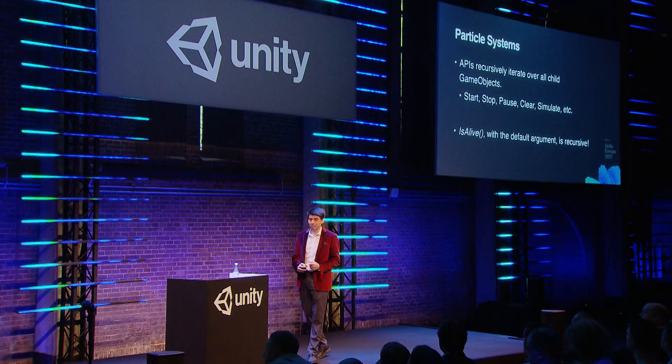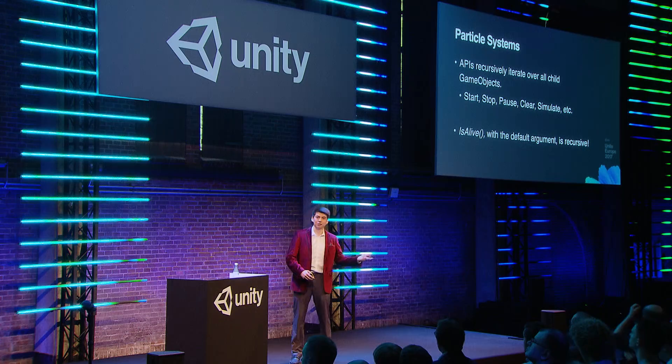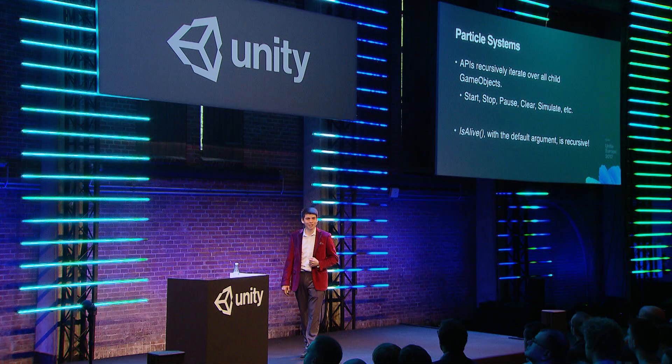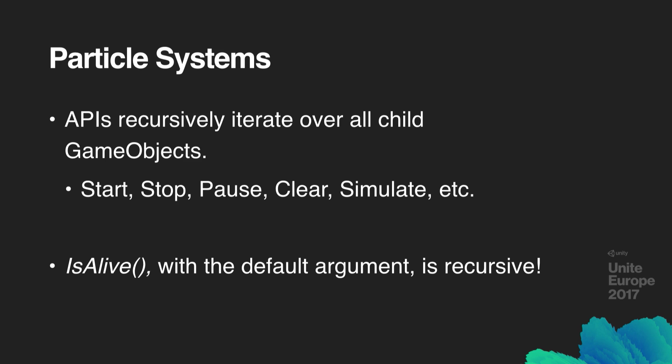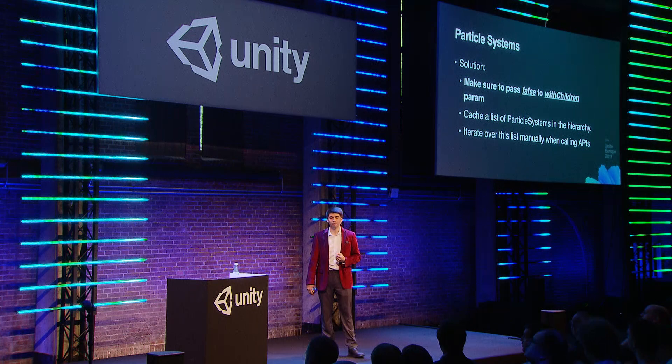It doesn't do this in any particularly intelligent way. It goes to the particle system, finds all the children of that particle system's transform, calls GetComponent on every single one of those transforms, and if there is a particle system, it invokes the appropriate Stop, Start, or IsAlive method. If those child transforms have their own children, it recurses into those as well. If you have a particularly deep transform hierarchy, this can definitely become a problem. All these APIs have a WithChildren parameter — it defaults to true. Set it to false; it eliminates this behavior and will only change the particle system you're calling directly.